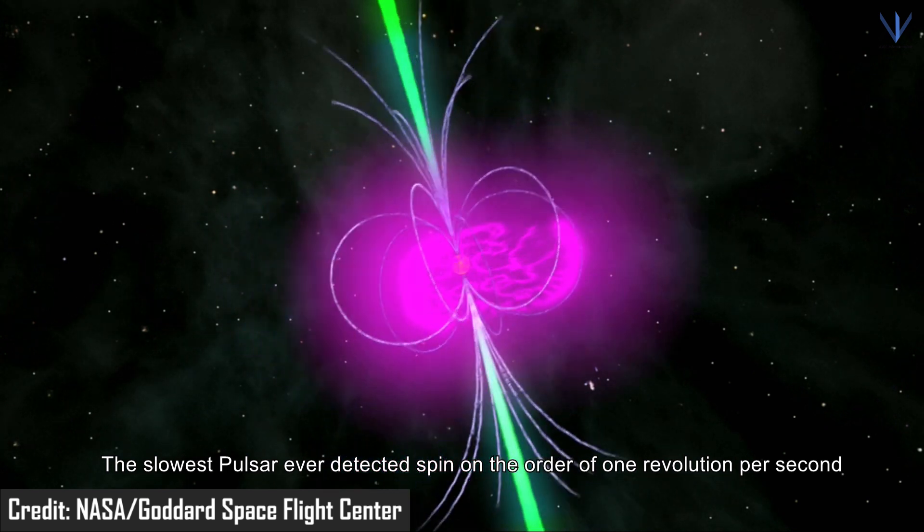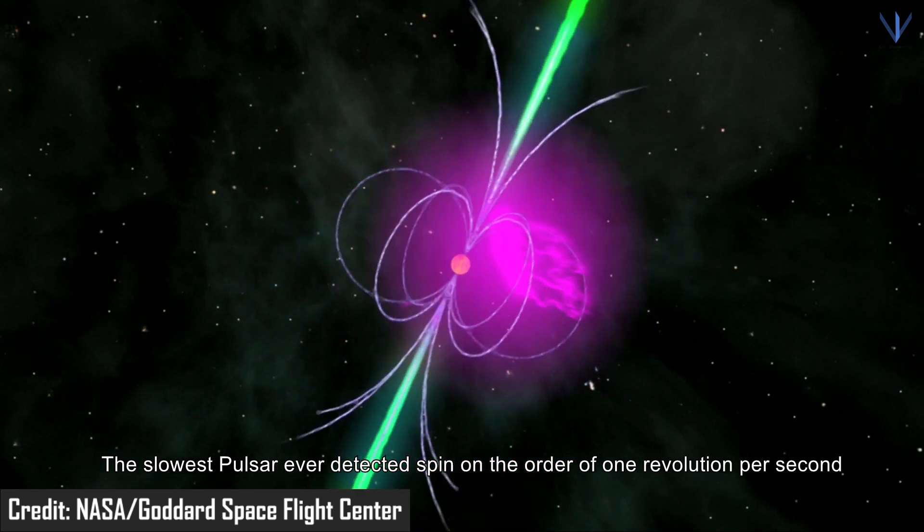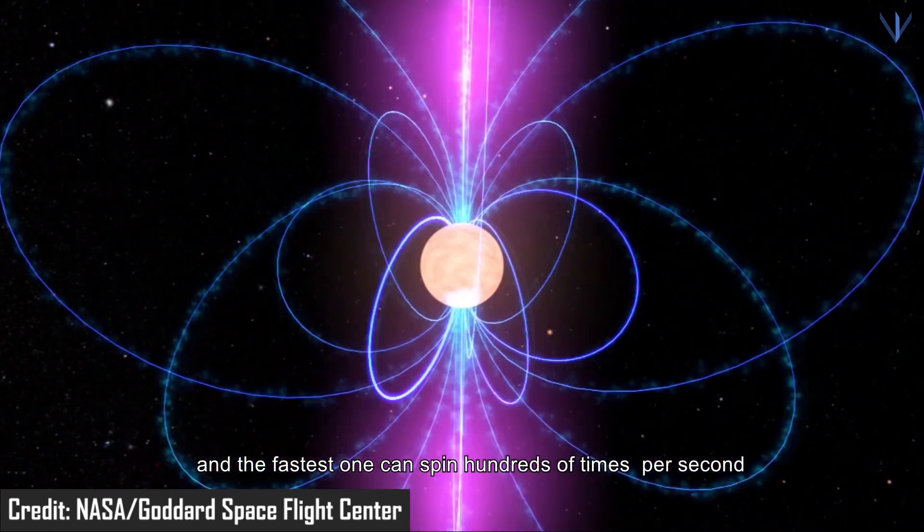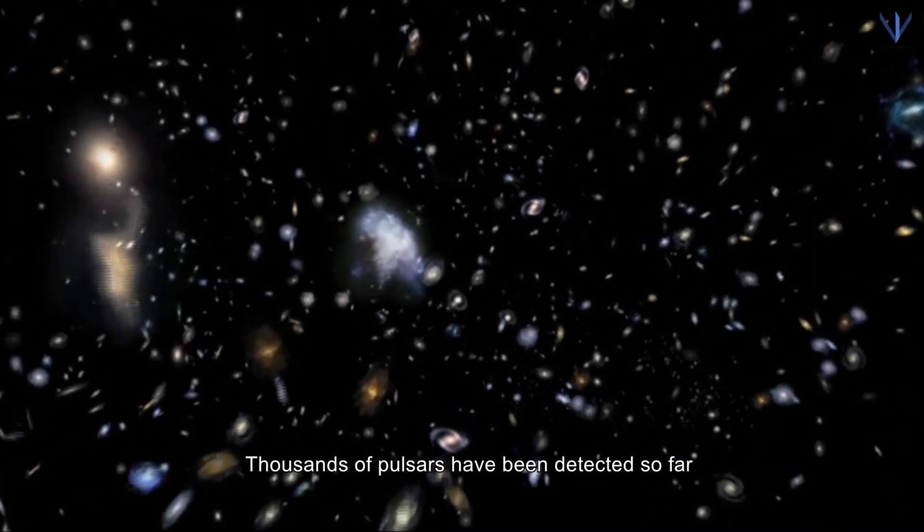The slowest pulsars ever detected spin on the order of one revolution per second and the fastest ones can spin hundreds of times per second. Thousands of pulsars have been detected so far.